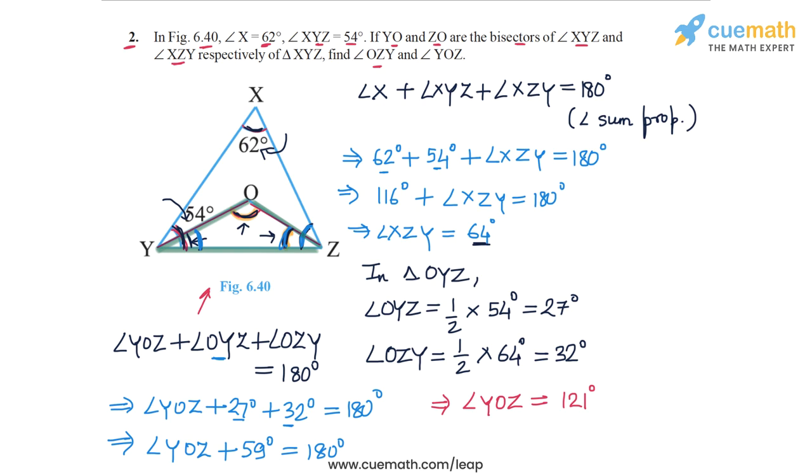So the answer, the two angles, the measure of the two angles, we have to find angle OZY and YOZ. OZY is 32 degrees. And YOZ is 121 degrees. So this is the answer to question number two.